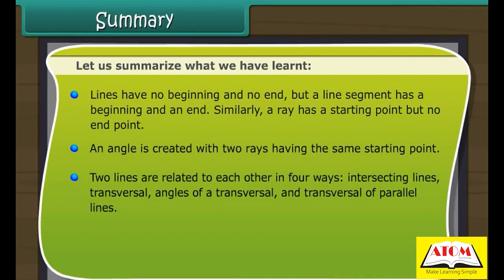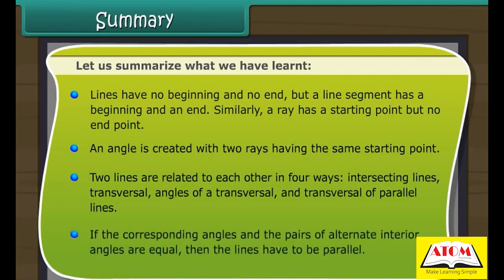Two lines are related to each other in four ways: intersecting lines, transversal, angles of a transversal, and transversal of parallel lines. If the corresponding angles and the pairs of alternate interior angles are equal, then the lines have to be parallel.